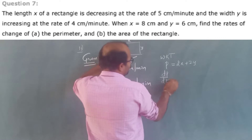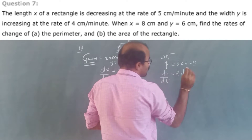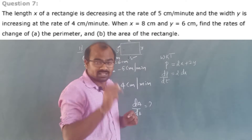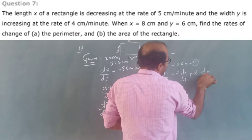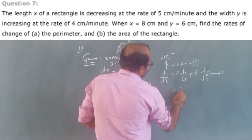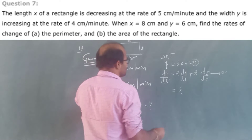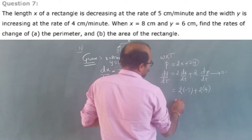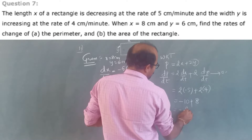Differentiating P = 2x + 2y with respect to t: dp/dt = 2(dx/dt) + 2(dy/dt). Substituting dx/dt = -5 and dy/dt = 4: dp/dt = 2(-5) + 2(4) = -10 + 8 = -2.